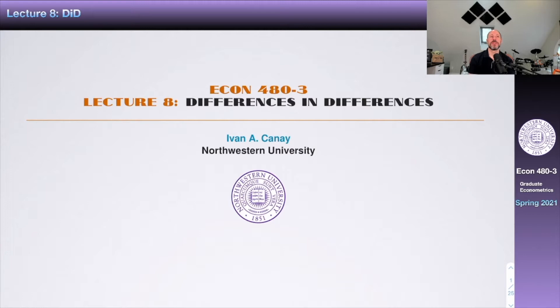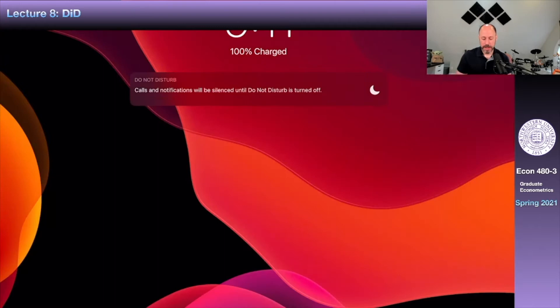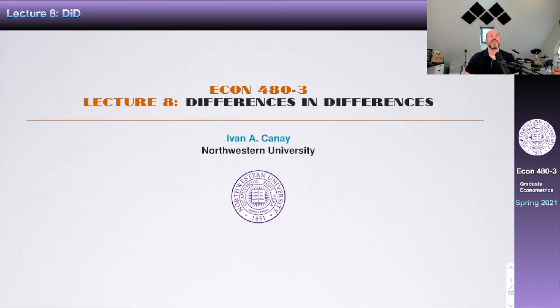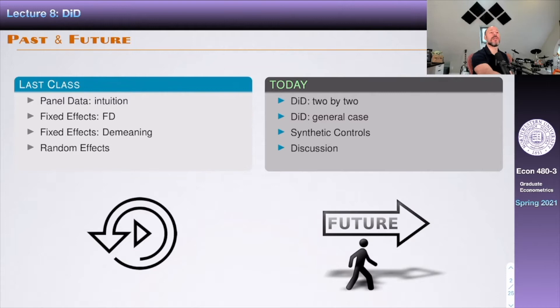So today we have our lecture number eight, and it's going to be about difference in differences. Last class we were talking about panel data. We talked about the intuition behind panels, and then we also discussed the first difference approach to estimate parameters in panel data, the demeaning technique, both fitting into the family of fixed effects estimators, and then we also talked about random effects.